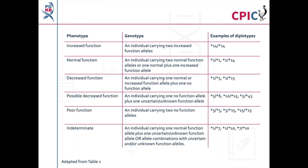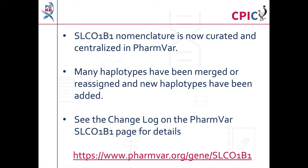Patients can be assigned an SLC01B1 phenotype based on the functional status of their SLC01B1 alleles. This table shows the different phenotypes that can be assigned along with example diplotypes; this information can also be found in Table 1 of the guideline. Gene information tables for SLC01B1 are available on the PharmGKB website. As part of producing this guideline, SLC01B1 allele nomenclature was curated and centralised into PharmVar, resulting in significant changes including the merging or reassignment of alleles. The SLC01B1 page on PharmVar contains a change log with further details.